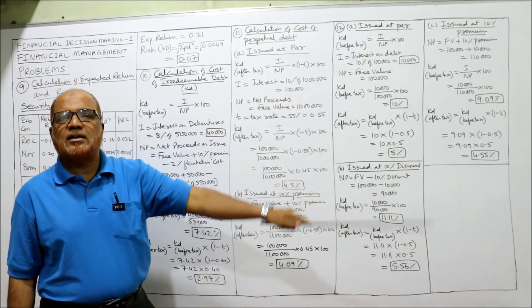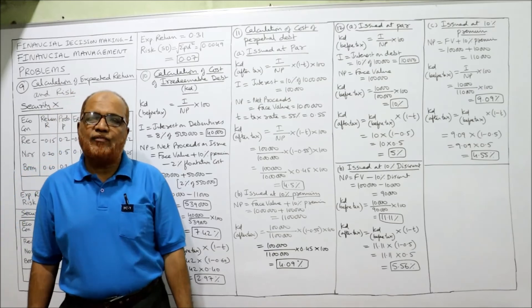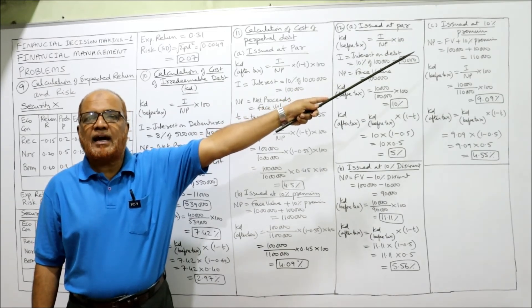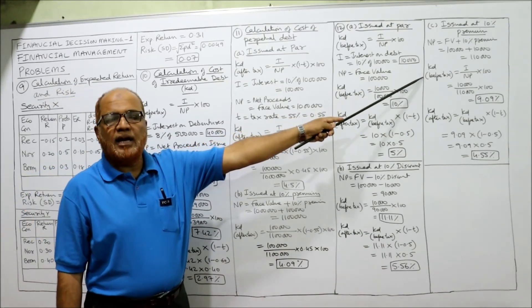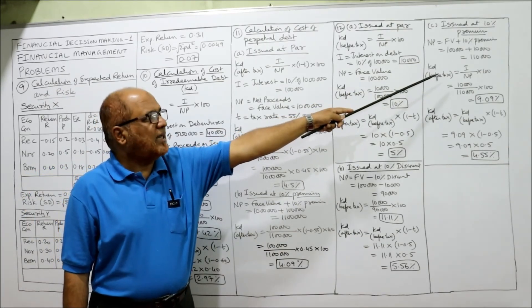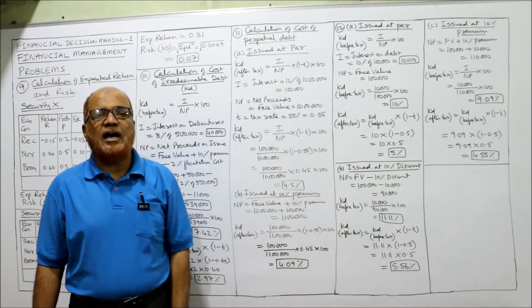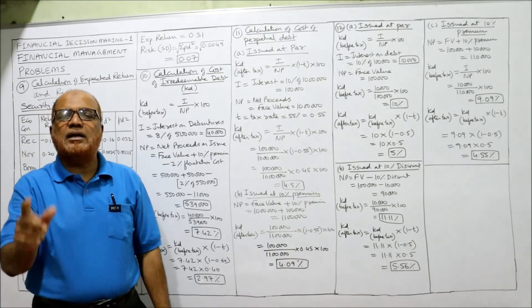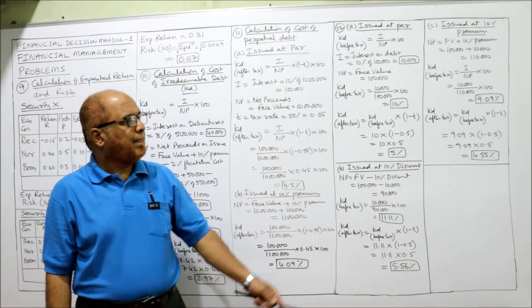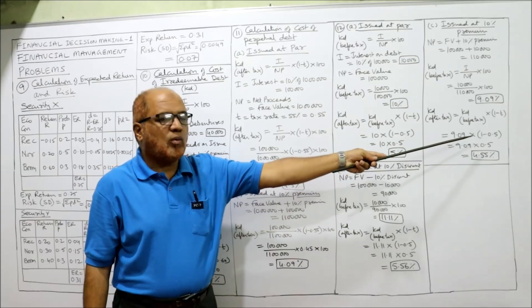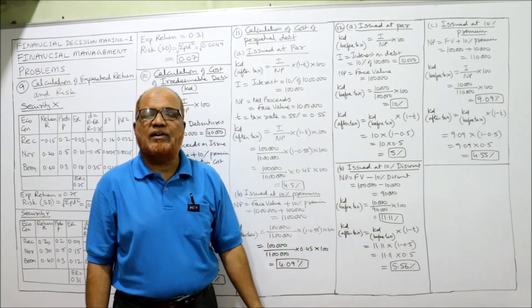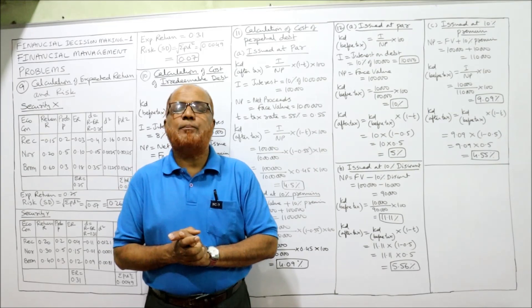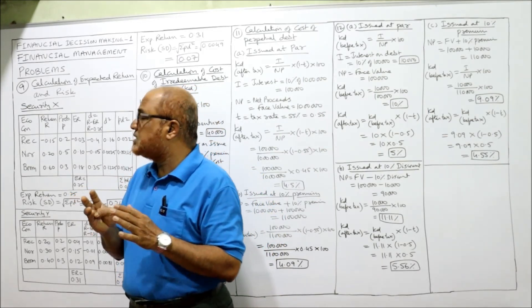Case C — issued at 10% premium. Premium is added to face value. Net proceeds = ₹1 lakh + 10% of ₹1 lakh = ₹1,00,000 + ₹10,000 = ₹1,10,000. KD before tax = 10,000 / 1,10,000 × 100 = 9.09%. KD after tax = 9.09% × (1 - 0.5) = 9.09% × 0.5 = 4.55%. In this video, four problems (9, 10, 11, 12) have been explained.